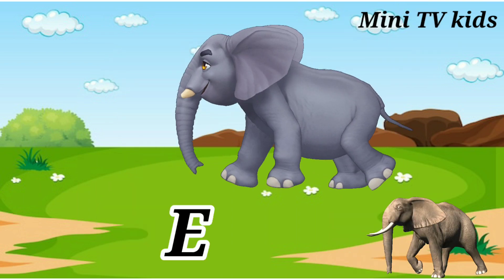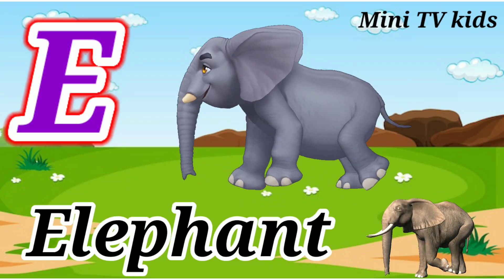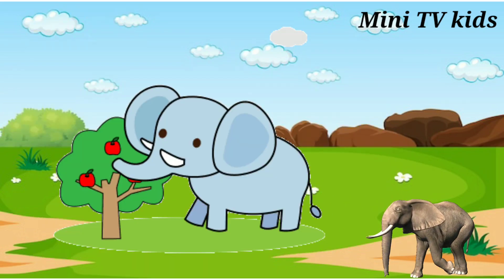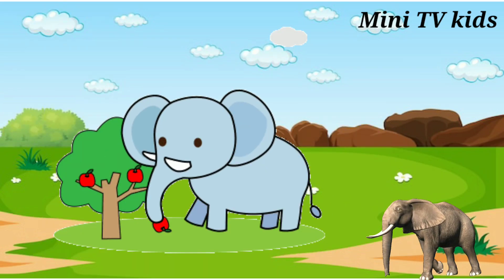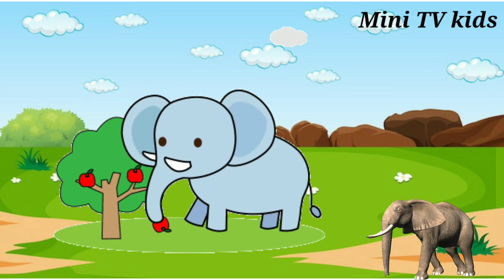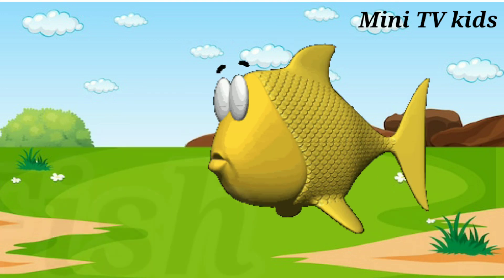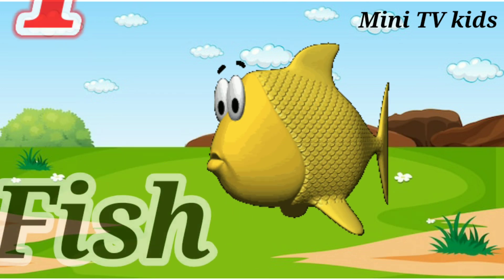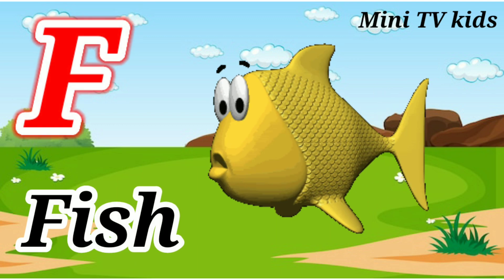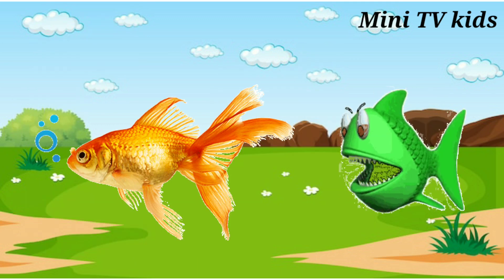E for Elephant. Elephant means Athi. F for Fish. Fish means Mushly.